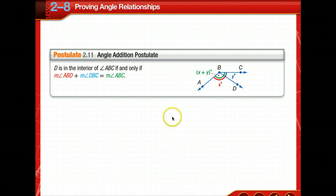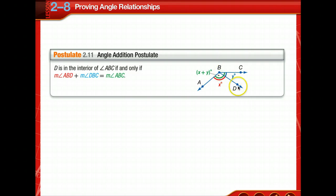Also, the angle addition postulate — a lot like the segment addition postulate from last lesson. D is interior of angle ABC if and only if the measurement of angle ABD plus the measurement of angle DBC is equal to the measurement of angle ABC.